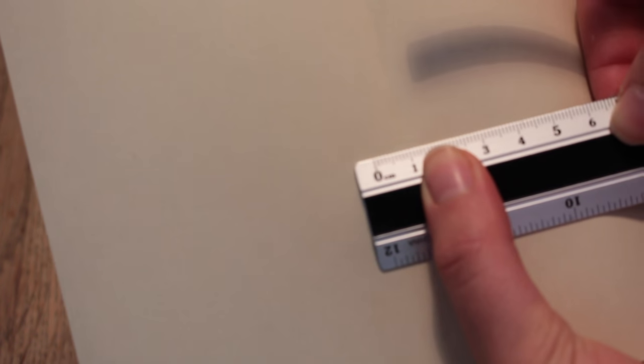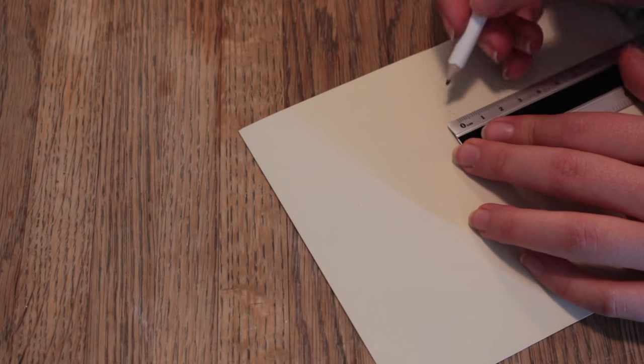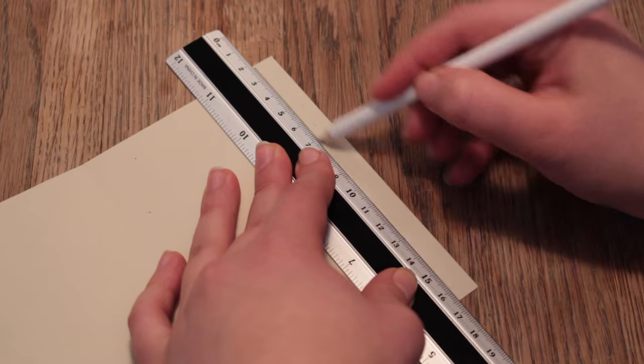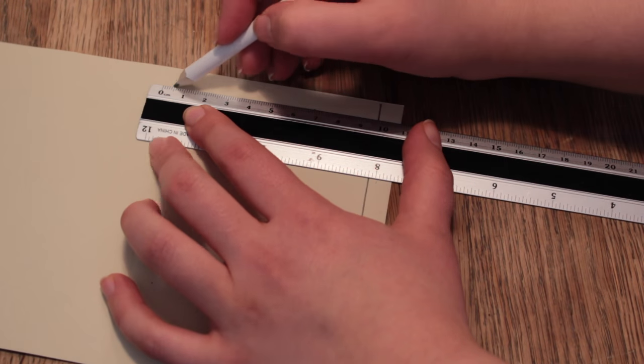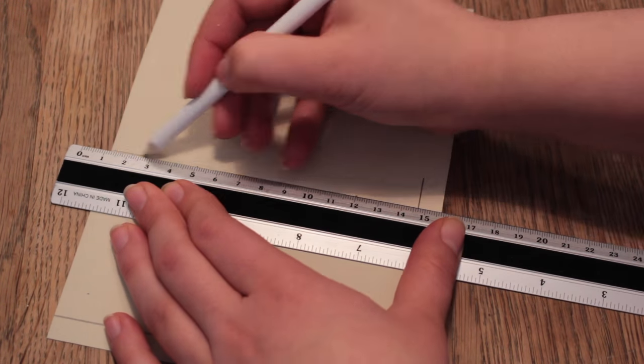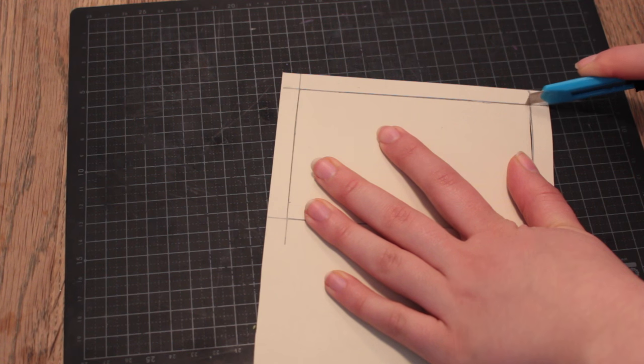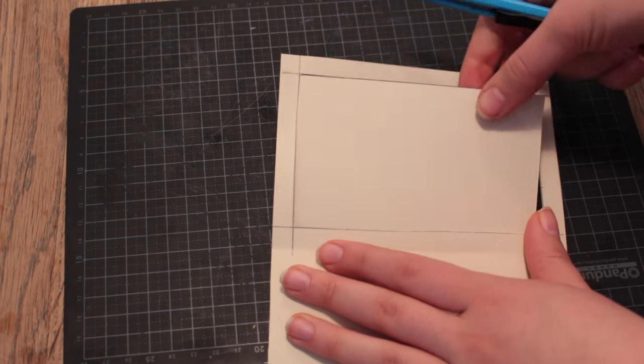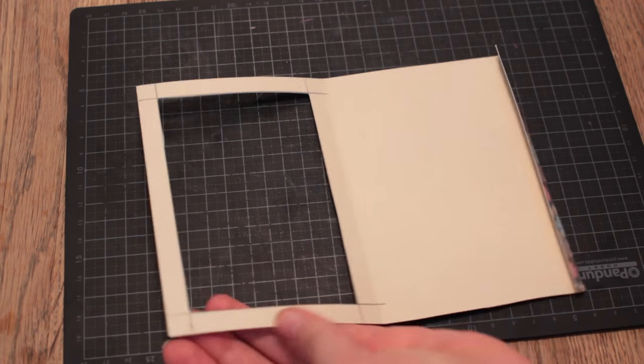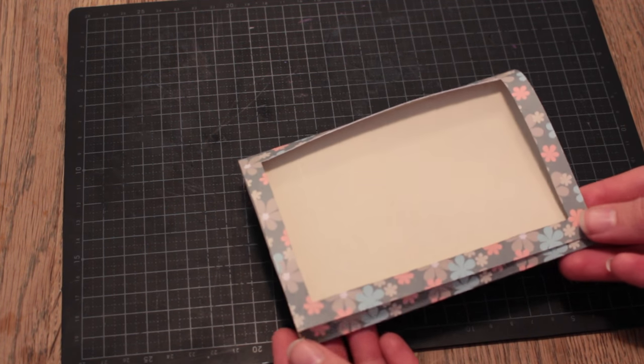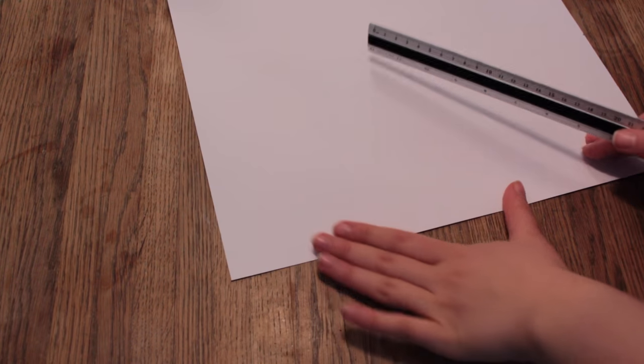So make the markings and then draw the lines. Now this inner rectangle needs to be cut out, so take your box cutter and your cutting board and then cut it out.